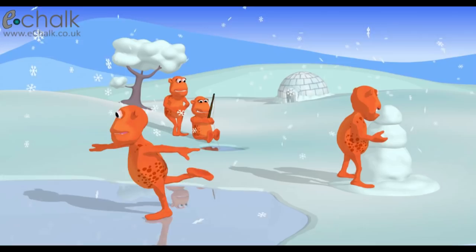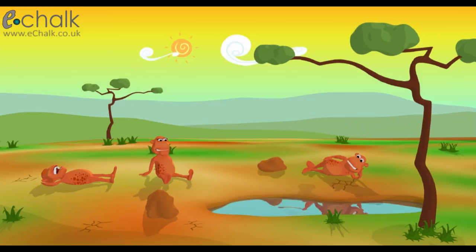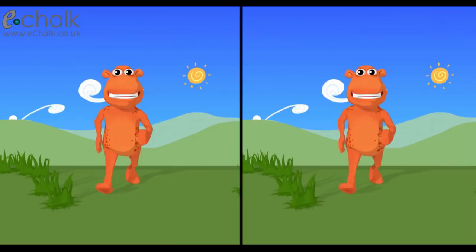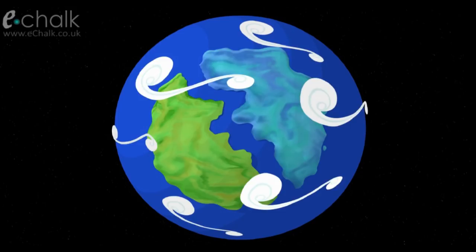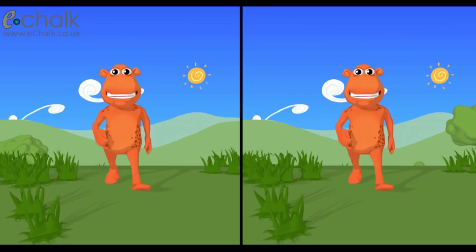The landmasses drifted apart, some to the frozen north, and some to the warmer south. The northern landmass became very cold over time, while the southern one became very warm indeed. The race of Lumpties was split into two groups, each inhabiting their own unique landmass, and so they became isolated from each other.